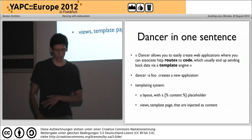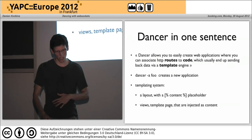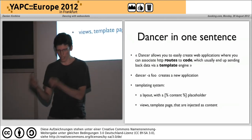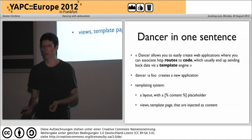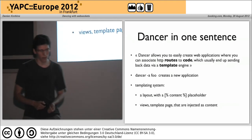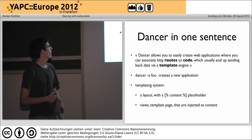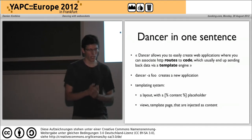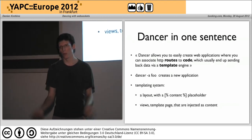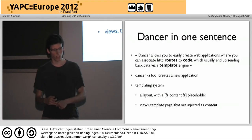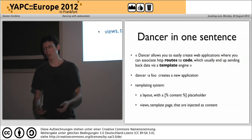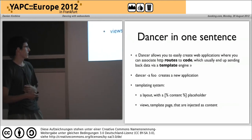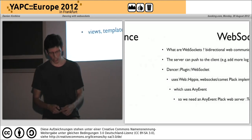If you don't know what Dancer is, it's a web framework. Dancer allows you to easily create web applications where you can associate HTTP routes to code, which usually ends up sending back data via a template engine. You start by creating a new application with 'dancer -a' and the name of your application. You choose a template system. It comes with a concept of a layout — the static stuff on all your web pages — and in this layout there is a content placeholder. Then you have template views which replace the content in your layout.